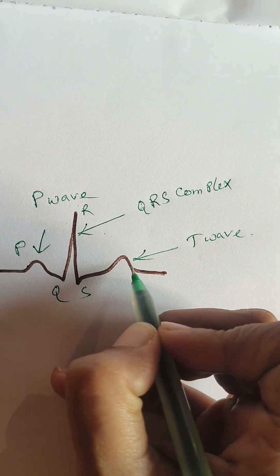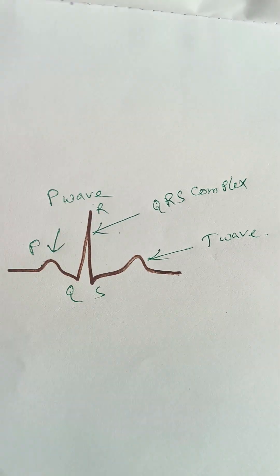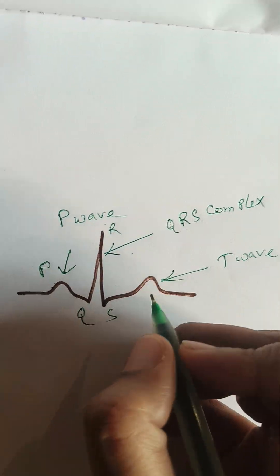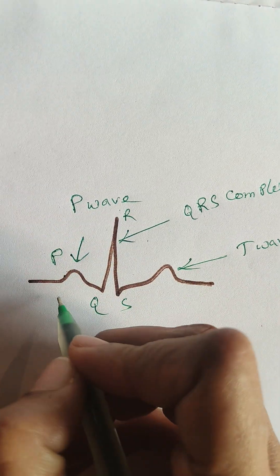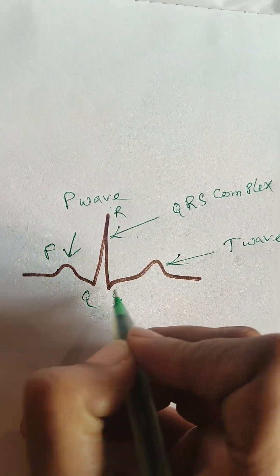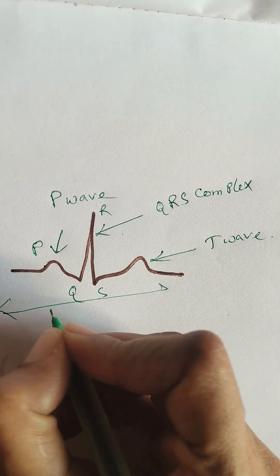Next is the T wave. This is due to ventricular repolarization. So this is a normal ECG.